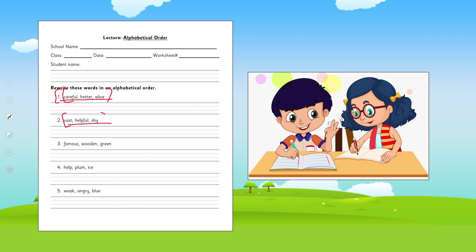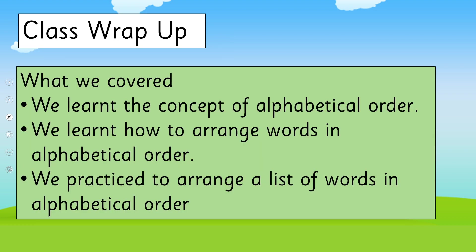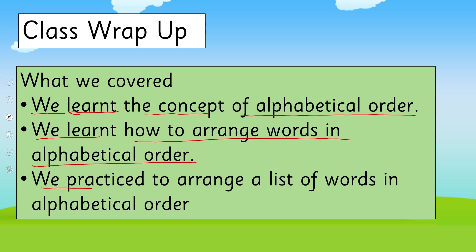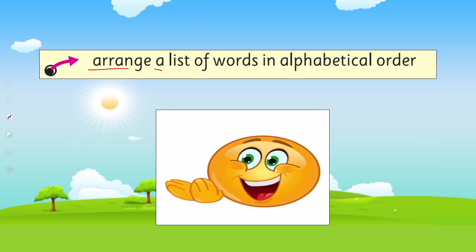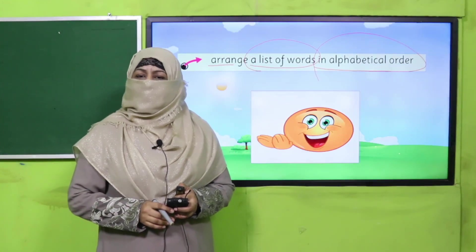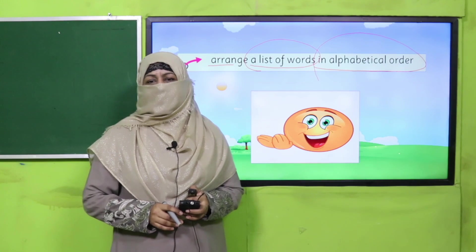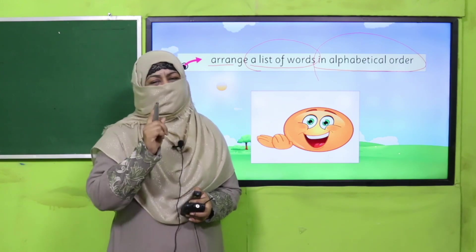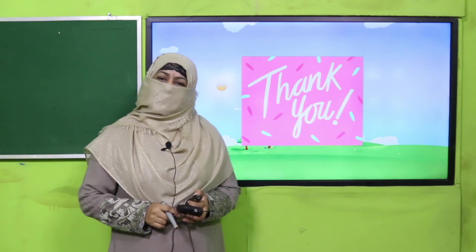In this way, what have we learned? We learned the concept of alphabetical order, how to arrange words in alphabetical order, and we practiced arranging a list of words in alphabetical order. In this way we achieved our SLO: to arrange a list of words in alphabetical order. That's it for today. Tomorrow I'll come again with a very interesting lesson. Till that time, keep learning and take very good care of yourself. Thank you, and Allah Hafiz.